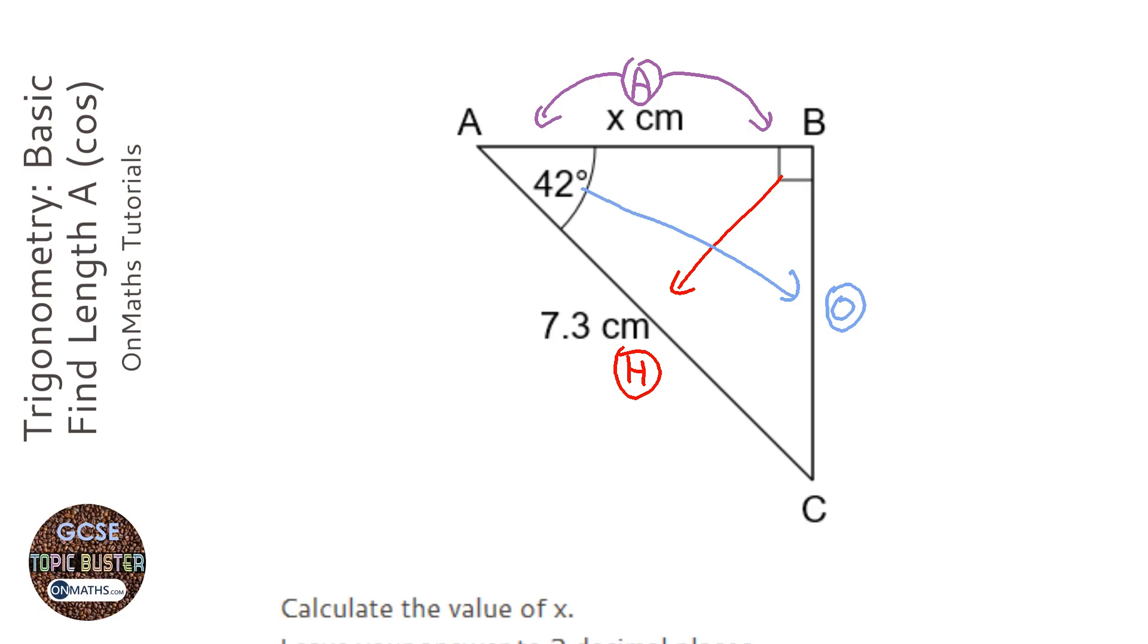Next step, we're going to cross out the one we're not using in this question. The hypotenuse is 7.3, so that's interesting, we want to keep that. The adjacent is X, so that's interesting, we want to keep that. But the opposite doesn't really have anything next to it.